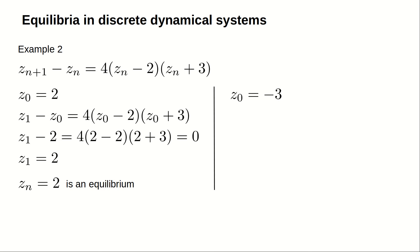We also find that negative 3 is an equilibrium. Again, the right-hand side becomes 0, so that z doesn't change. z sub n equals negative 3 is an equilibrium of the dynamical system.